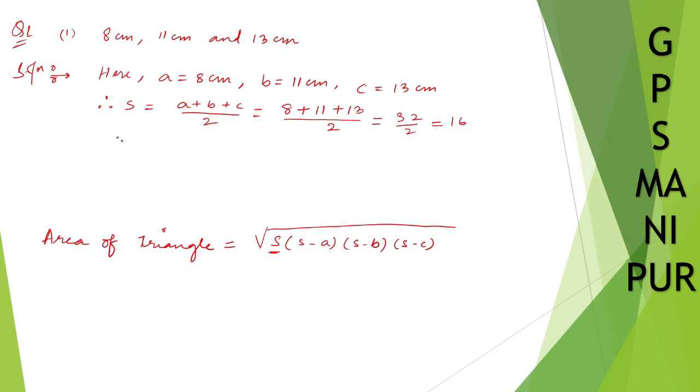Now we have got the value of S. We need to find the value of S minus A. So let us find out. Therefore S minus A is equal to S we got is 16. So write down 16 minus A we got as 8. So 16 minus 8 is 8.